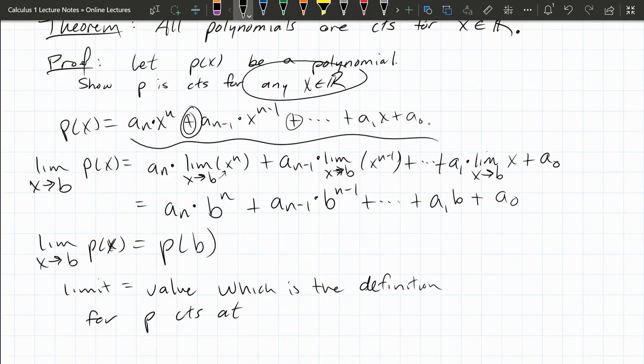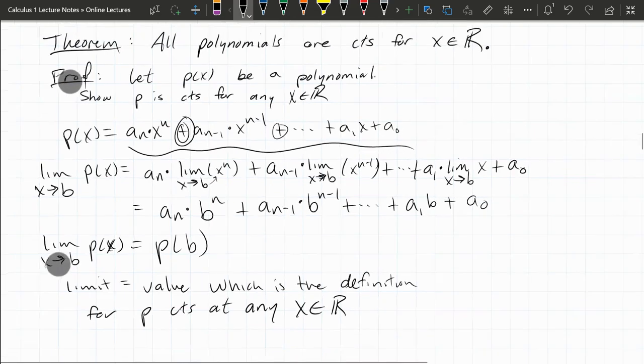I didn't put any stipulations on which number, so it could have been any number—any x value in the real numbers. So we just proved that all polynomials are continuous.